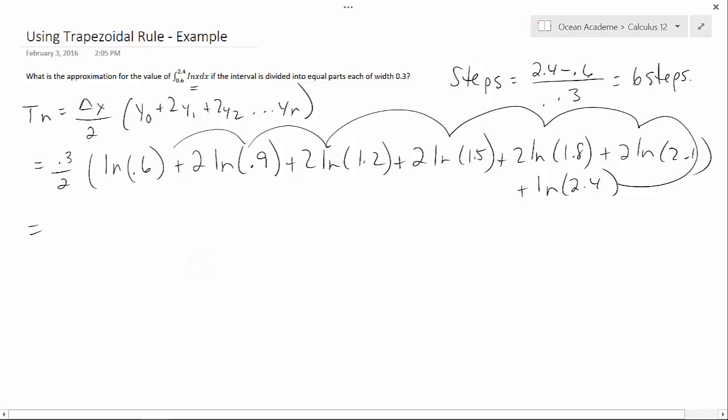So this becomes 0.3 over 2 multiplied by negative 0.5108 plus negative 0.2107 plus 0.3646 plus 0.8109 plus 1.1736 plus 1.4839 plus 0.8755.